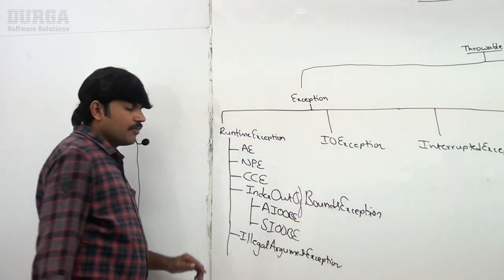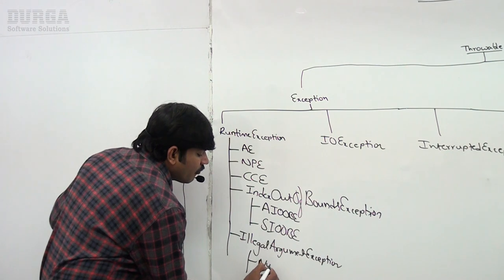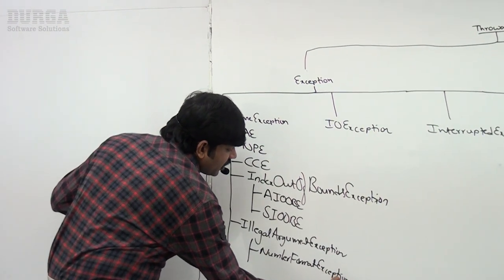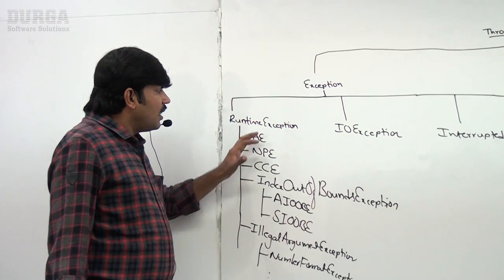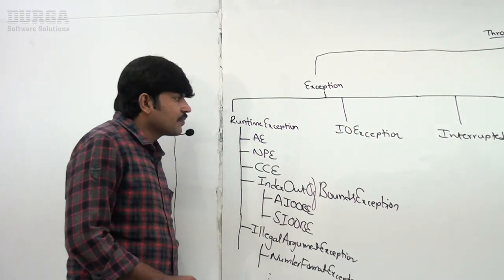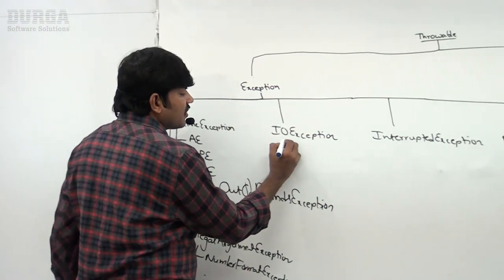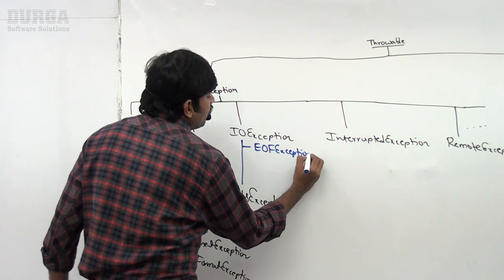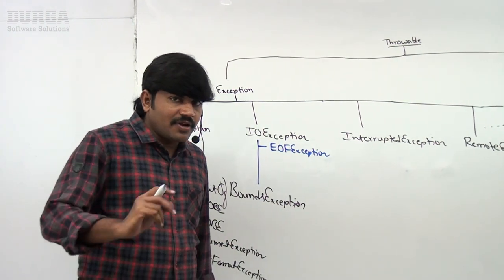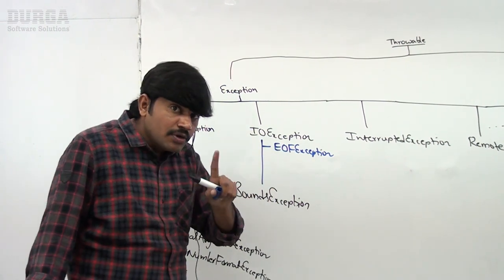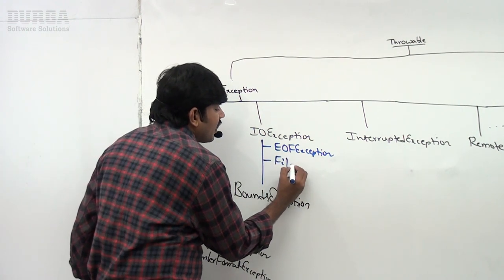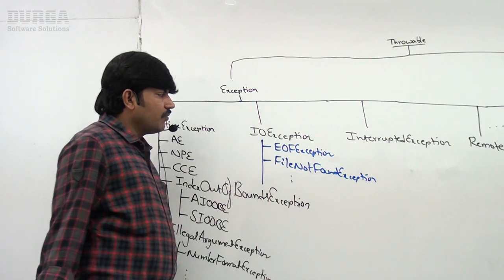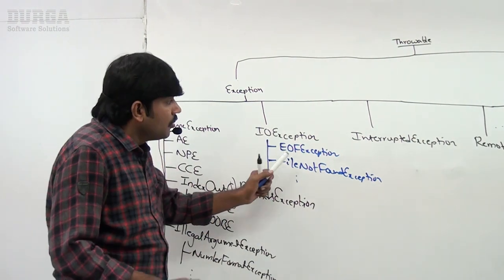Also under RuntimeException: IllegalArgumentException, and its child class NumberFormatException. Under IOException, there are multiple child classes such as EOFException — EOF means End Of File — and FileNotFoundException. These are some of the commonly occurring exceptions under IOException.